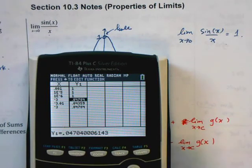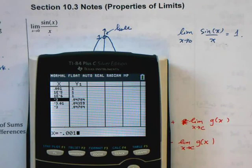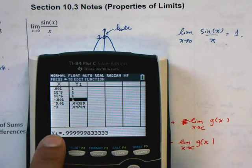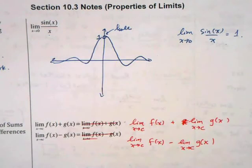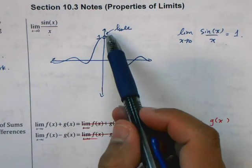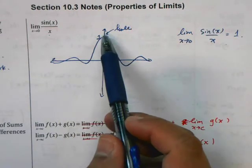I can also come at this from the left side. As you come at zero from the left side, the expression gets closer and closer to one. Coming from the right it approaches one, coming from the left it approaches one. Therefore, the limit is equal to one.